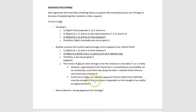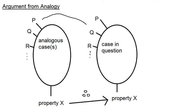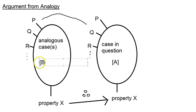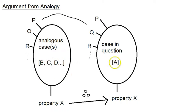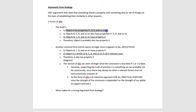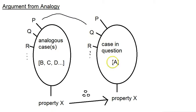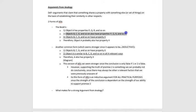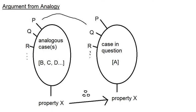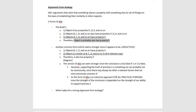Let's go back to the lecture notes. The case in question is what the book refers to as object A, and the analogous cases are B, C, D. Object A has properties P, Q, R, and so on. Objects B, C, D also have those properties. Objects B, C, D also have property X. Those three things are the three premises needed to make argument from analogy work. The conclusion is: therefore, object A also probably has property X.